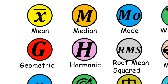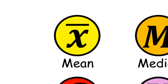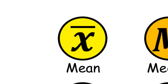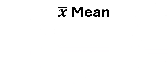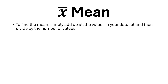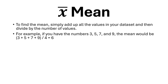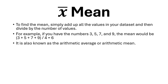Mean. To find the mean, simply add up all the values in your dataset and then divide by the number of values. For example, if you have the numbers 3, 5, 7, and 9, the mean would be: 3 plus 5 plus 7 plus 9, divided by 4, is equal to 6.